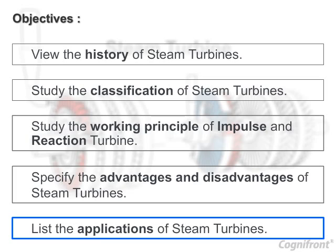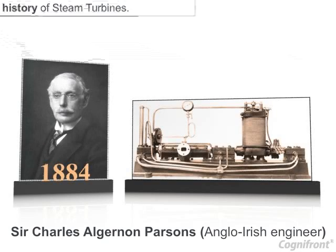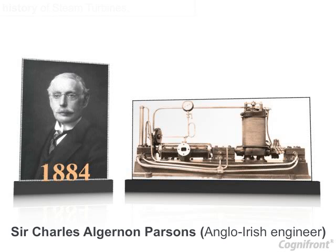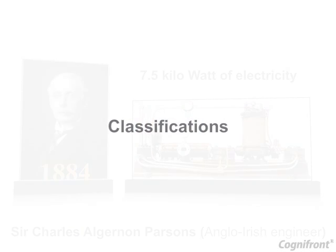History of steam turbines: Anglo-Irish engineer Sir Charles Algernon Parsons invented the modern steam turbine in 1884. The first model of the steam turbine was connected to a dynamo that generated 7.5 kilowatts of electricity.